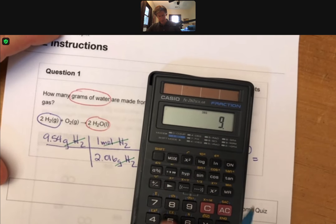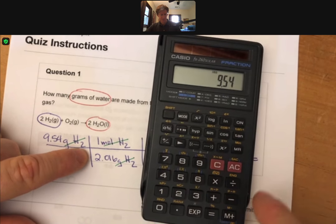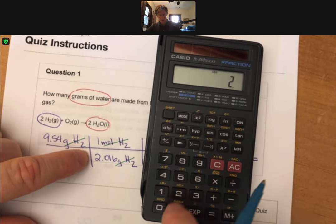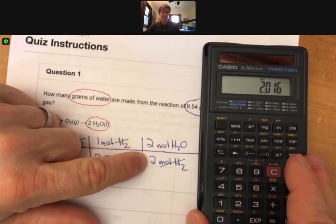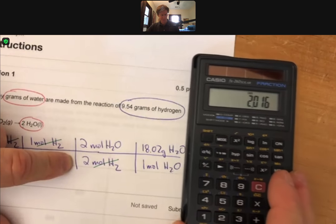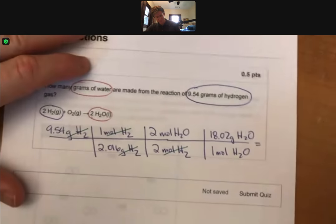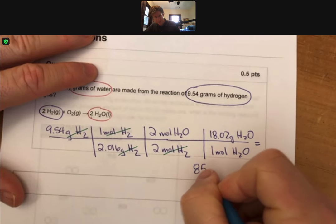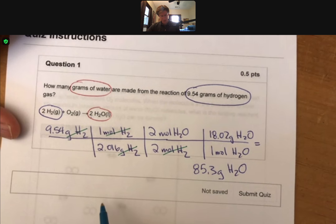9.54 divided by 2.016 times 2 divided by 2, times 18.02. And I get 85.3 grams of H2O to three significant figures. 85.3. And that is my answer that I'm going to put in here.